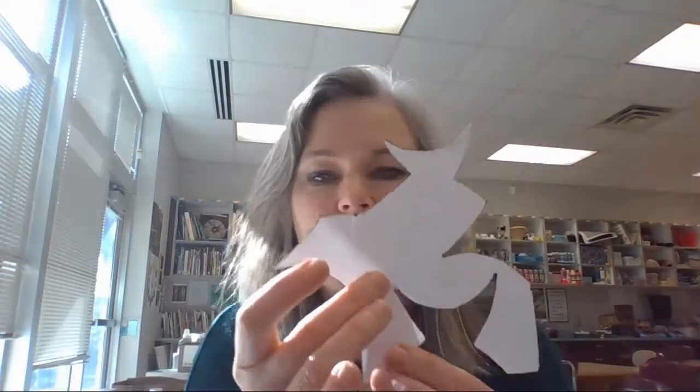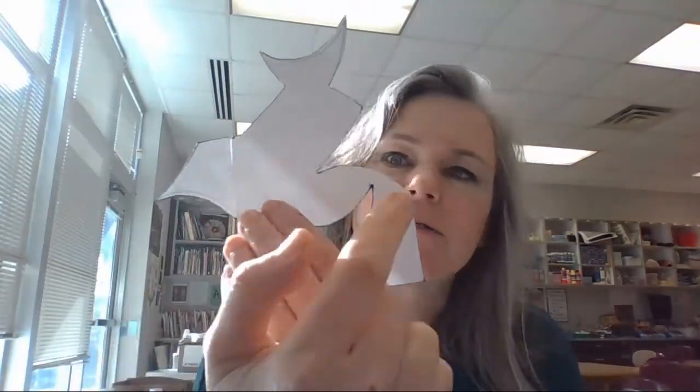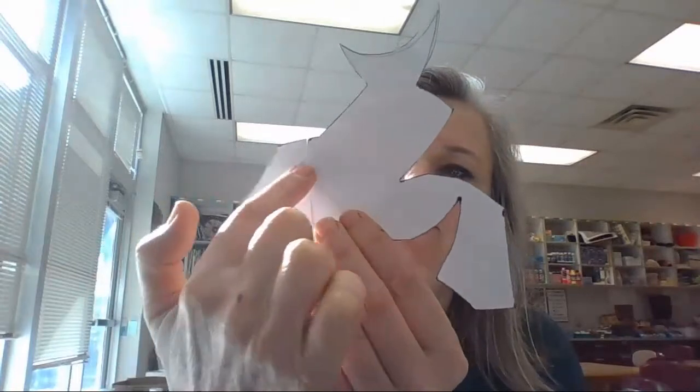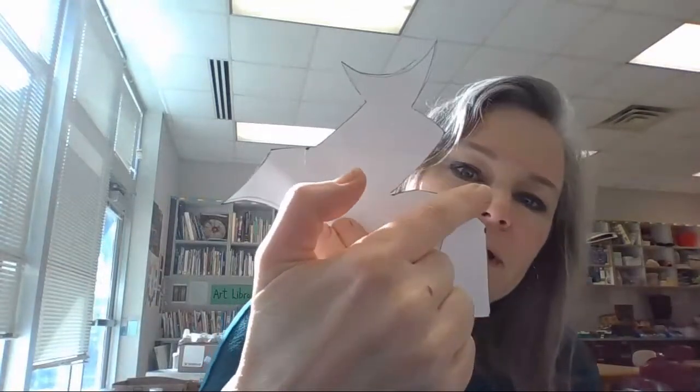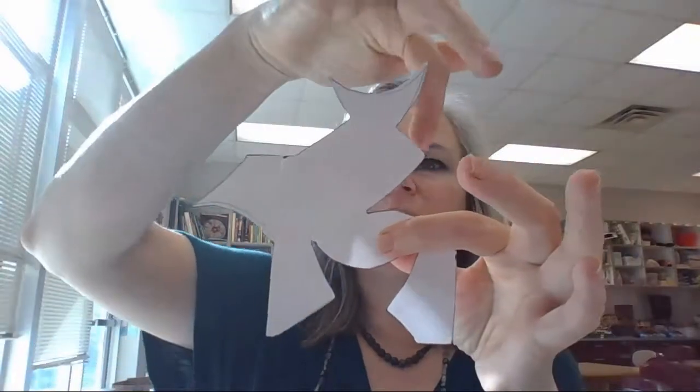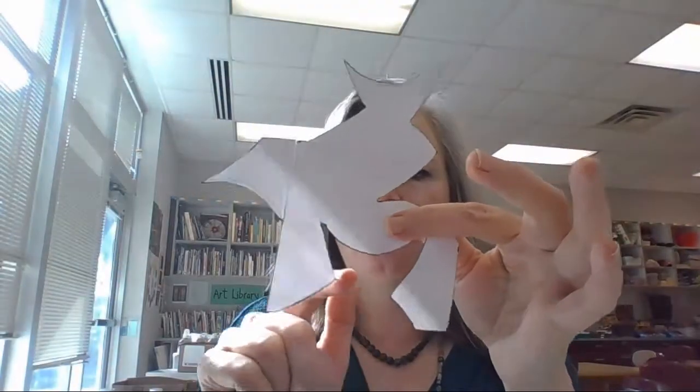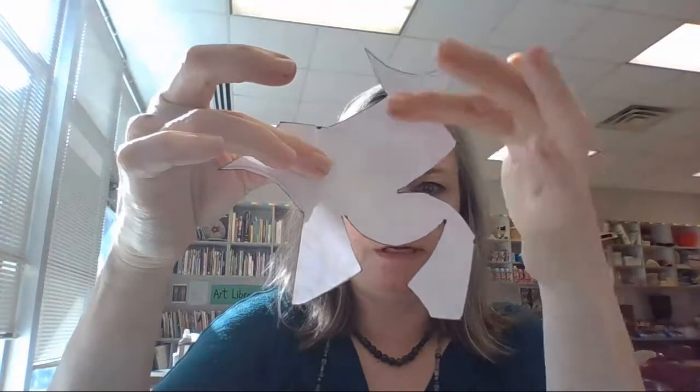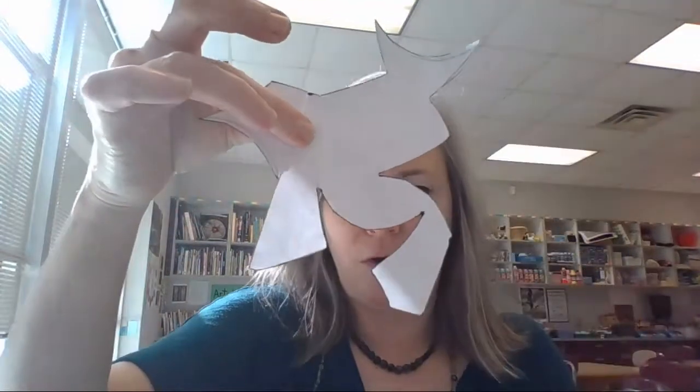So the main thing about getting something to tessellate is this shape over here. If you slide it over, it fits in this space right here. And then this shape right here, if you slide it down, you can see that shape repeated. I'm not going to explain how I made it in this video, you can watch it in the other slide.